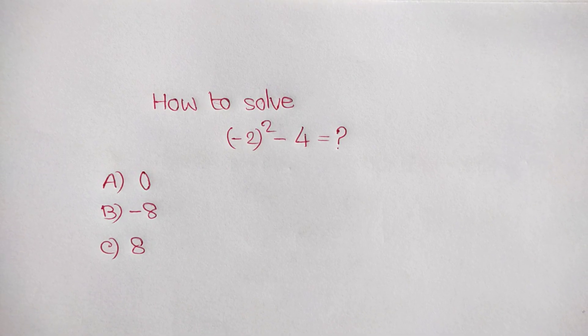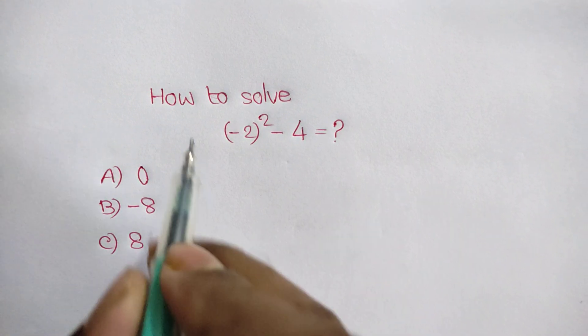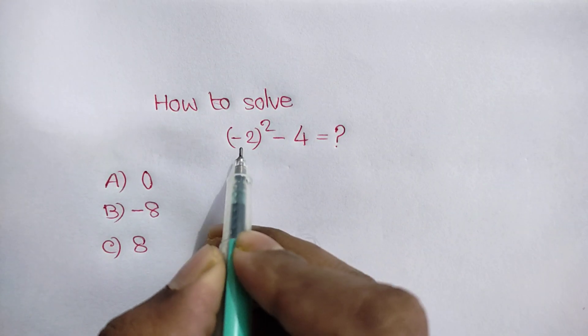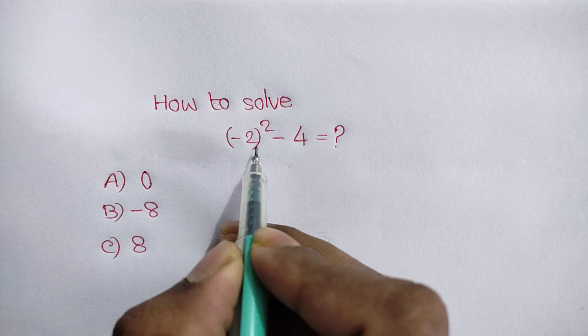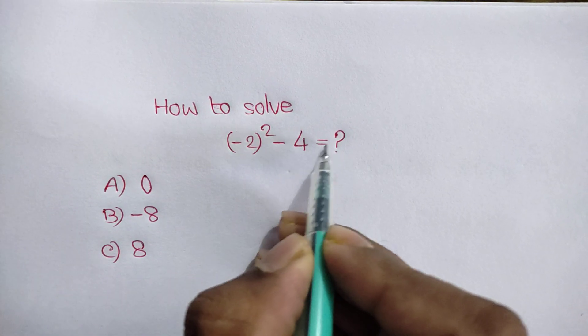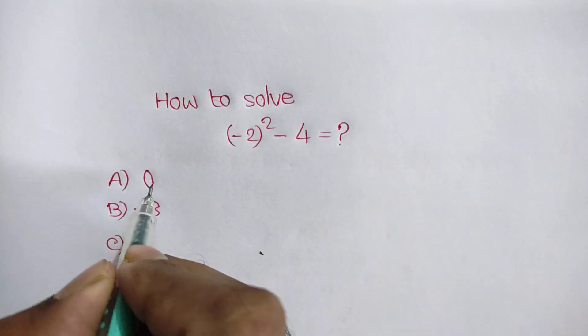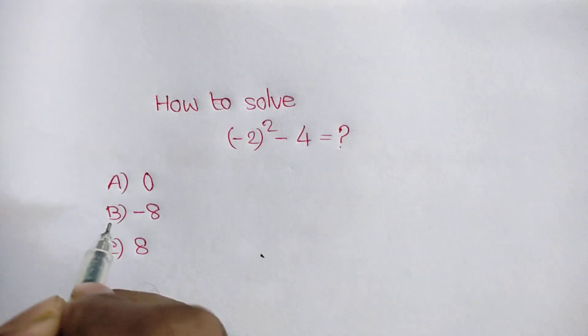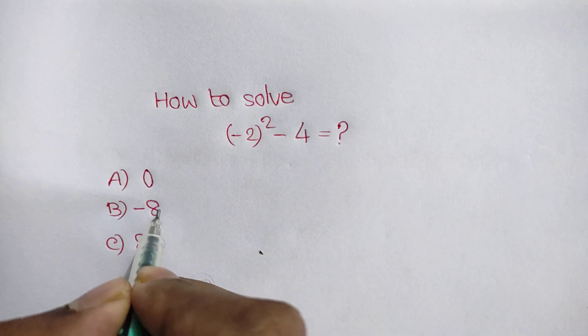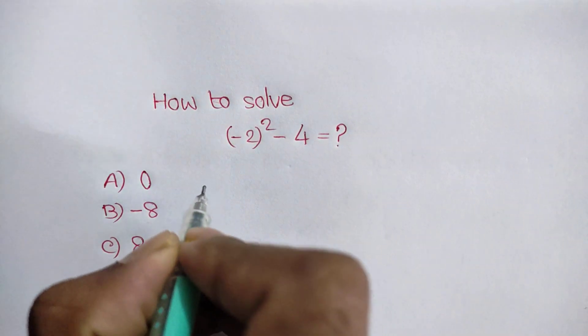Hi everyone, how are you? How to solve minus 2 bracket squared minus 4 is equal to what? What is the right answer? a) 0, b) minus 8, c) 8.